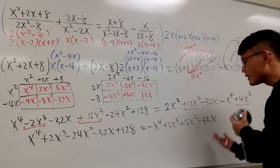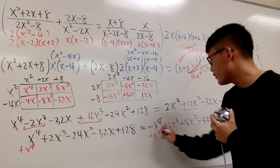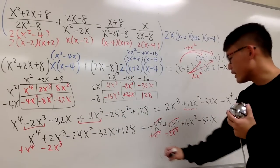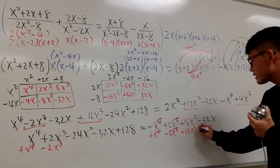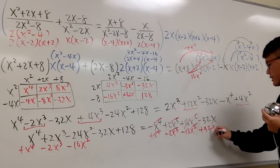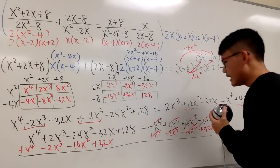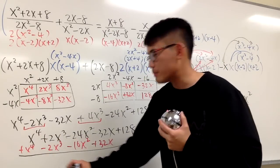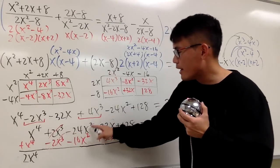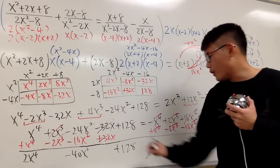All right, now we are going to move everything from the right-hand side to the left-hand side. Let's add x to the fourth power on both sides. And then I'm going to subtract 2x to the third power on both sides, so that this and that will cancel — and you see that also cancels. And I'm going to subtract 16x squared on both sides as well. And for this one, we are going to add 32x on both sides. So at the end, x to the fourth power plus x to the fourth power gives us 2x to the fourth power, and then the 2x³ terms cancel out. This is negative 24x squared minus 16x squared, giving us negative 40x squared. And this and that cancel out. And then we bring this down: plus 128. All in all, this is equal to zero.